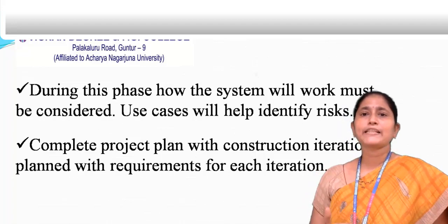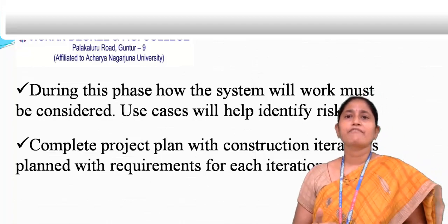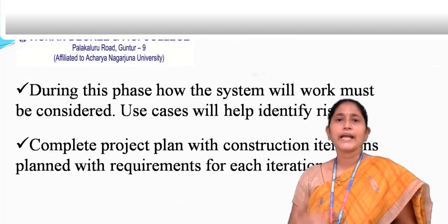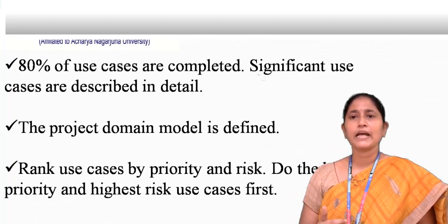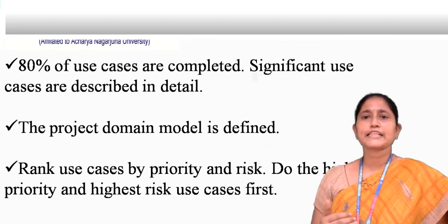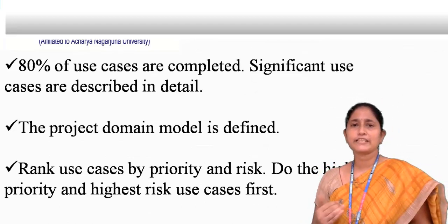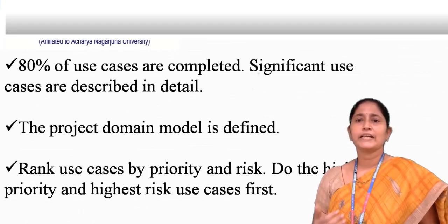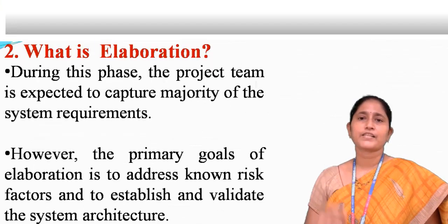Along this process, complete the project plan with construction iterations planned with the requirements for each iteration. Mostly 80% of use cases are completed and significant use cases are described in detail. The project domain model is defined and use cases are ranked by priority and risk — do the highest priority, highest risk use cases first.